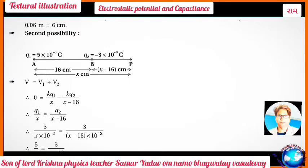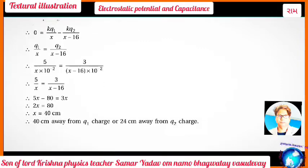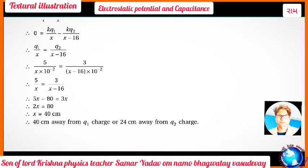Q1/X = Q2/(X - 16), so 5/X = 3/(X - 16). Cross-multiplying: 5X - 80 = 3X, therefore 2X = 80, therefore X = 40 centimeters. So the point is 40 centimeters away from Q1 charge, or 24 centimeters away from Q2 charge.